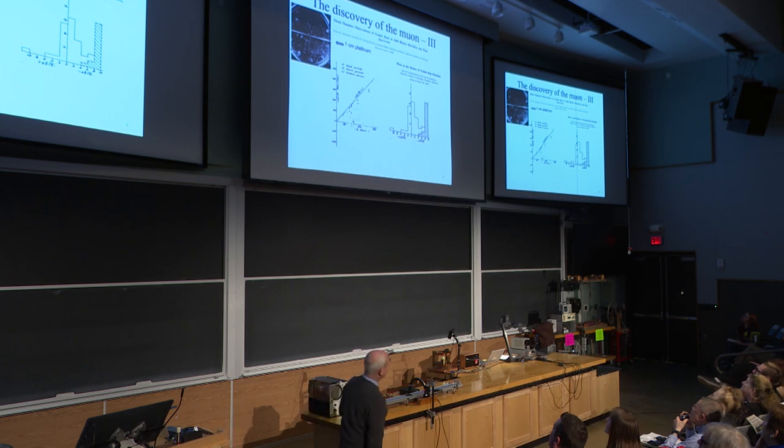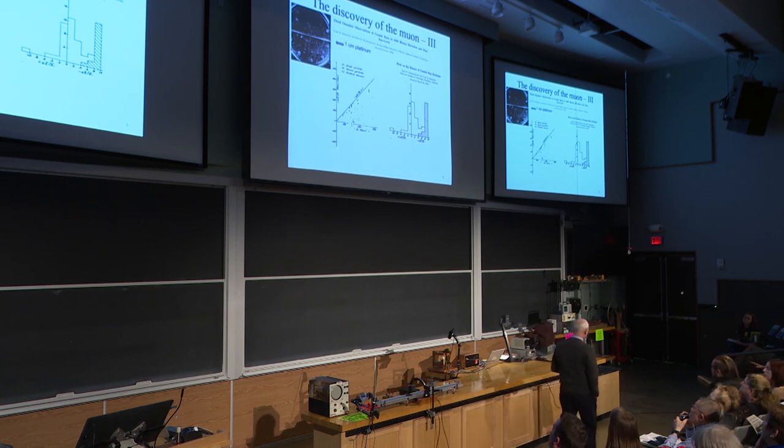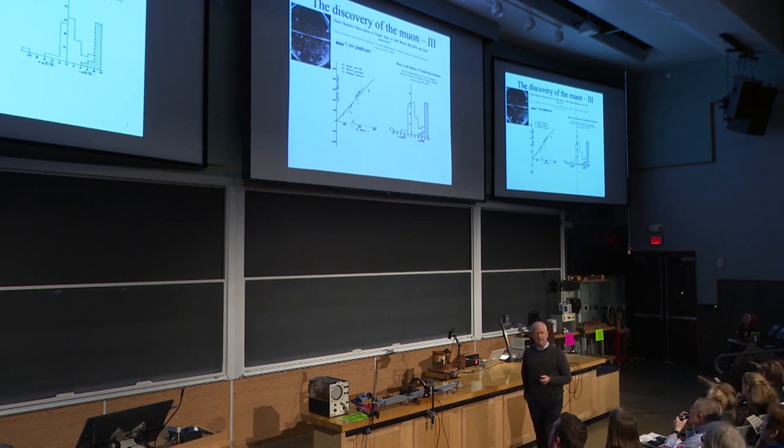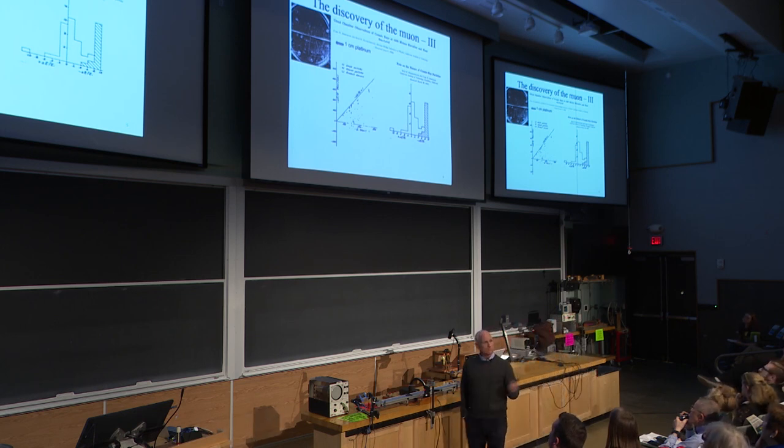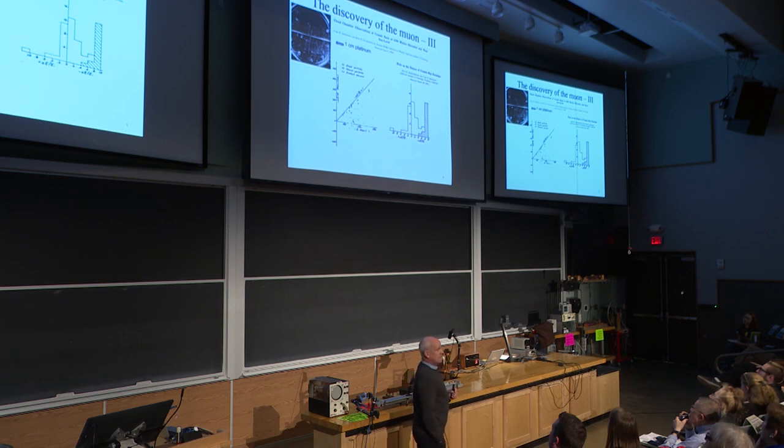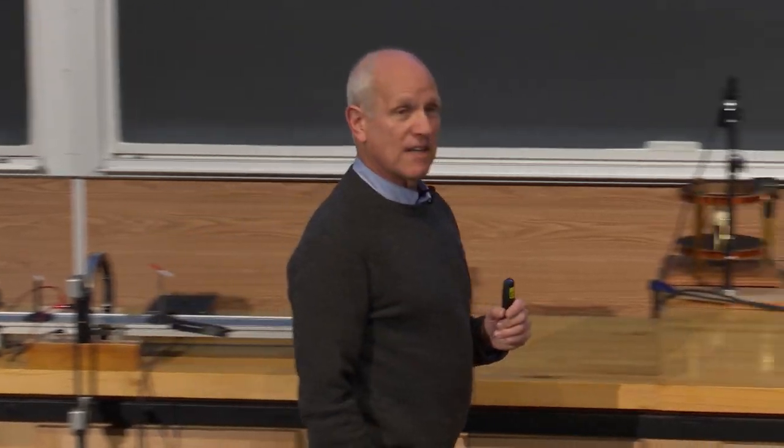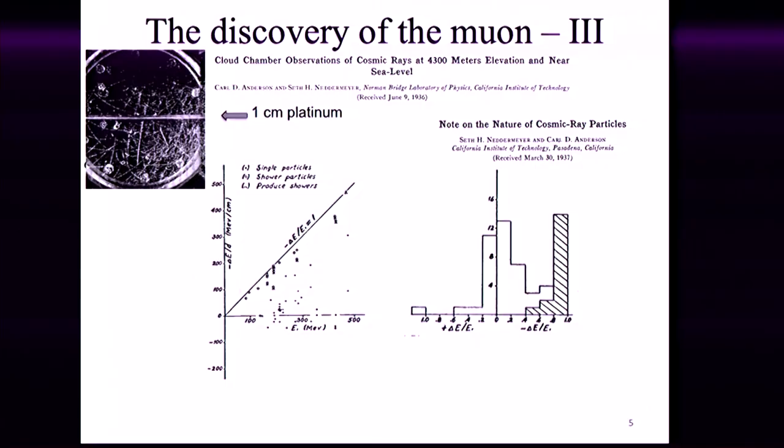So on the left graph, the vertical axis shows how much energy the particles lose, essentially given by their curvature after going through the plate. And the horizontal axis shows the amount of energy that they had initially, the curvature before the plate. And electrons, this solid line on the graph on the left, the diagonal line is the theory for electrons which was working very, very well. But you can see that some of the points fall well below that line on the graph.